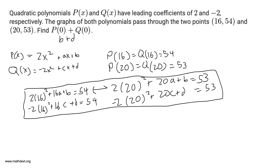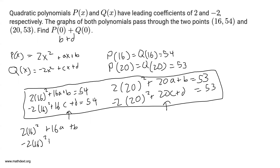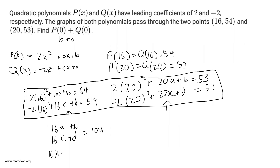We could go ahead and solve the first two for a and b, and the last two for c and d, but instead I'm going to add the first pair and add the second pair and see what we get. Adding the left-hand sides: 2(16²) + 16a + b + (-2(16²) + 16c + d) equals 54 + 54 = 108. The 2(16²) and -2(16²) cancel to zero, leaving 16a + b + 16c + d = 108, which we can group as 16(a + c) + (b + d) = 108.